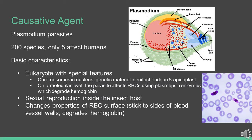The causative agent for malaria is a parasite called Plasmodium. There are 200 species, but only 5 affect humans. The basic characteristics of the parasite are that they have chromosomes in the nucleus and genetic material in the mitochondria and apicoplasts.